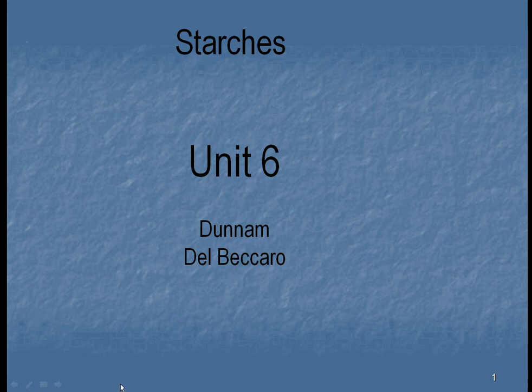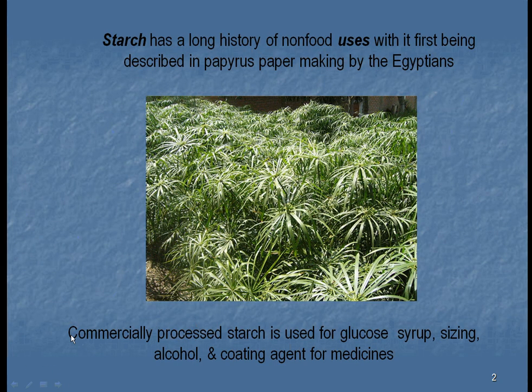Welcome to unit 6, all about starches. In this chapter we're going to look at starches in many different forms to see how humans interact with them. Starches involve more than just food. Some of the earliest known uses besides food included papyrus. The Egyptians used the starches in papyrus to make paper, and manuscripts made this way still survive to this day. Starches are also used with sugar to make syrup, in clothing to firm it up, in alcohol, and in medicines — for example, as a coating on vitamins to help them reach your stomach.